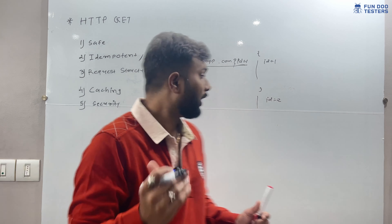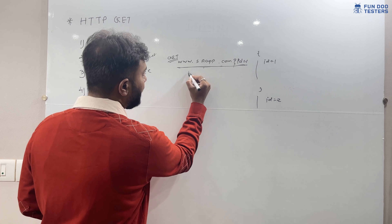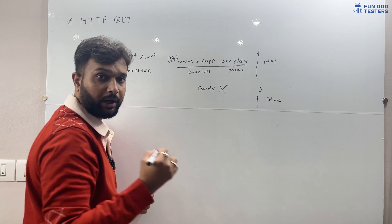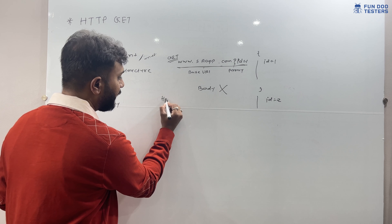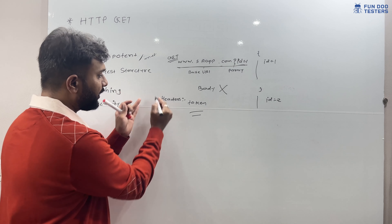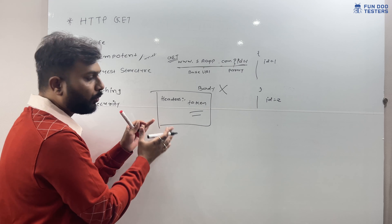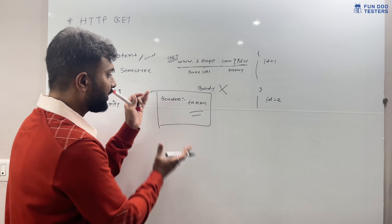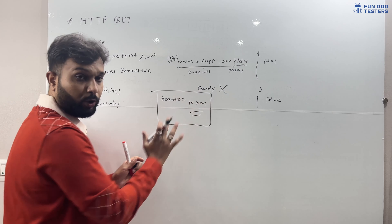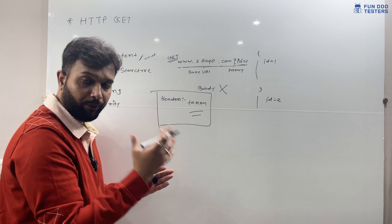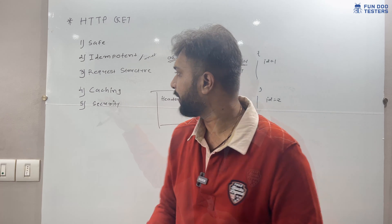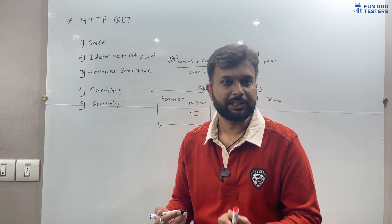Regarding the request structure: for a GET API we need a base URI and parameters. A body is not required for a GET API. However, we may pass headers containing tokens and other information — these remain the same across GET, POST, and all API calls for a given application. The key point is that for GET, there is no body; we just pass path or query parameters.